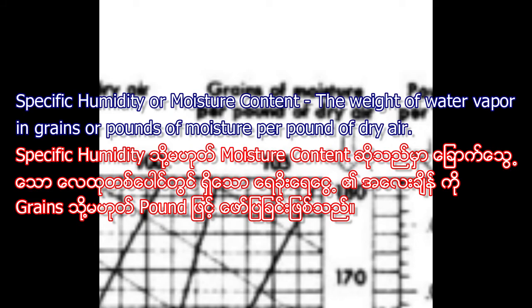Specific humidity, or moisture content, is the weight of water vapor in grains or pounds of moisture per pound of dry air.